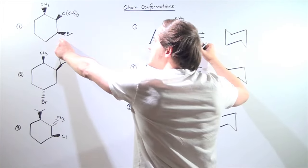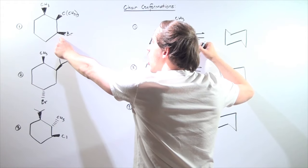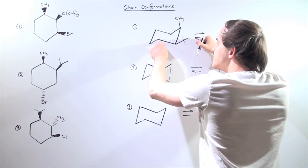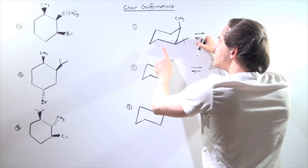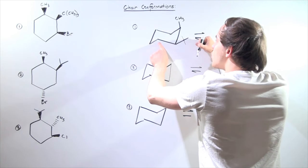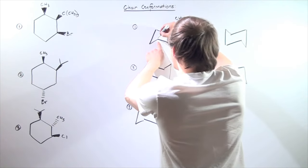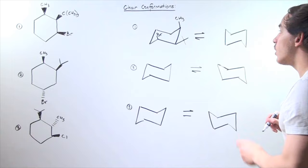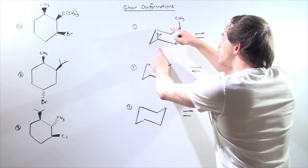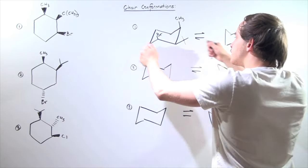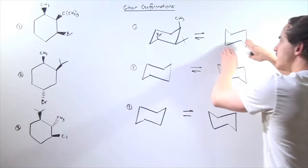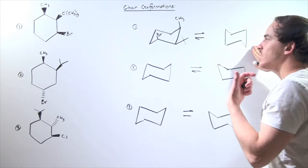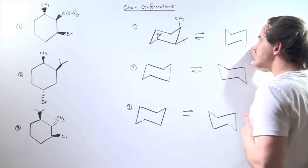Next up is bromine. Br is also pointing upward, so one carbon over, the bond pointing upward is the axial bond — so this is our Br. When our chair conformation flips and interconverts from one form to the other, all the axial bonds become equatorial, and all the equatorial bonds become axial.